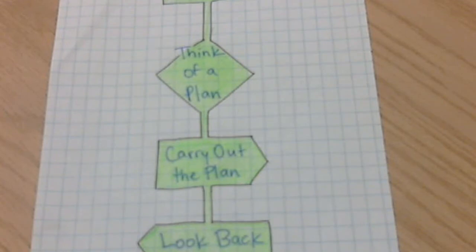You could draw a diagram or look for a pattern. You can make a table. You can use a formula. You can use guess and check. You can solve a simpler problem. Or you can use logical reasoning. All those things are going to help you figure out how you are going to try to solve the problem.